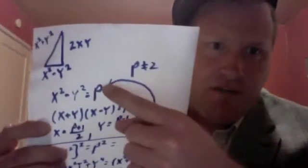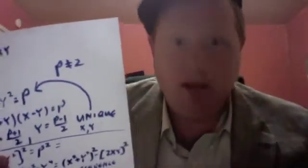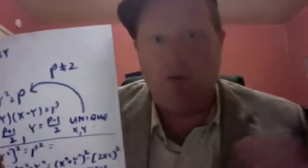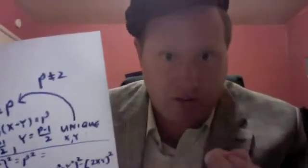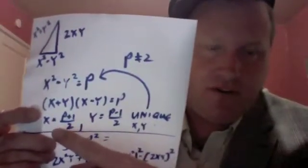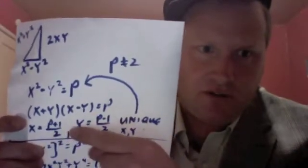It also means that p plus a square gets you a square in a unique way. For instance, 13 plus a square equals a square. Well, 13 plus 6 squared equals 7 squared. And sure enough, that's unique. Your 7 would be 13 plus 1 over 2 and your 6 would be 13 minus 1 over 2. And that's unique.